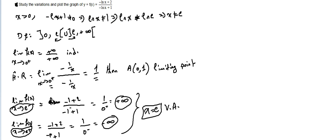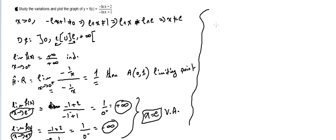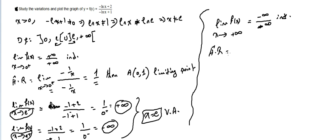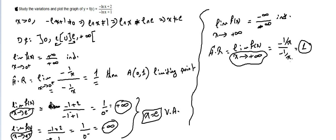We also compute the limit of f(x) as x approaches +∞. The form is −∞ over −∞, which is indeterminate. Applying L'Hôpital's rule: the derivative of the numerator is −1/x and the derivative of the denominator is also −1/x, so the ratio equals 1. Since the limit as x → +∞ equals a finite number, y = 1 is a horizontal asymptote. So we have a vertical asymptote, a horizontal asymptote, and a limiting point — all important for the graph.